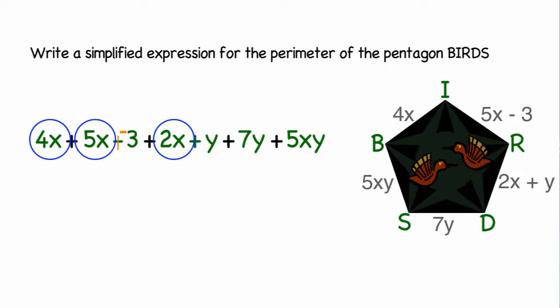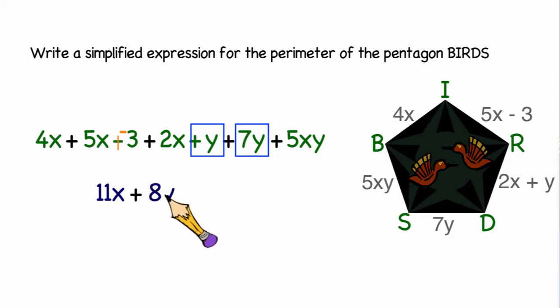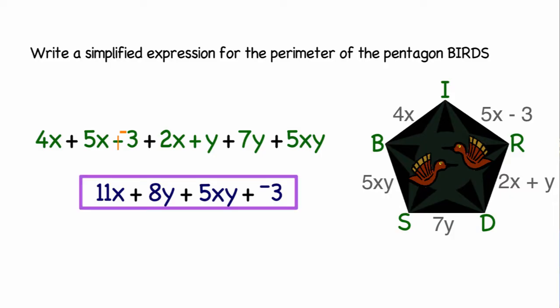4x + 5x + 2x is equal to 11x. I also noticed that two terms have the y as a variable. So I'm going to put a square around those. We'll be adding y to 7y, giving us 8y. 5xy is different than either x or y. That's its own term. It doesn't have any terms like it. And negative three also doesn't have any like terms. So we'll be adding those to the end of the expression. So the perimeter of the pentagon BIRDS is 11x + 8y + 5xy + (-3).